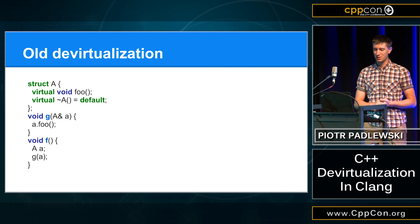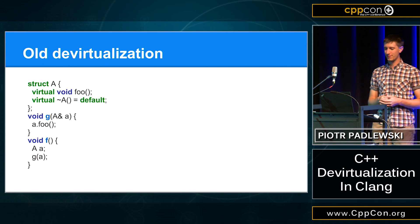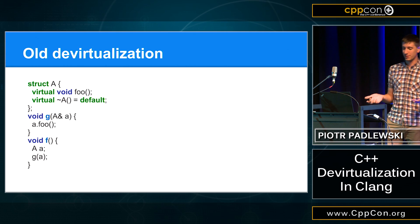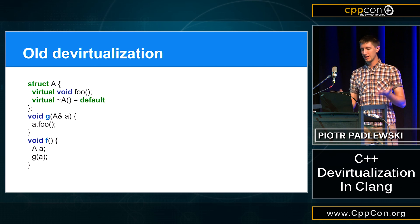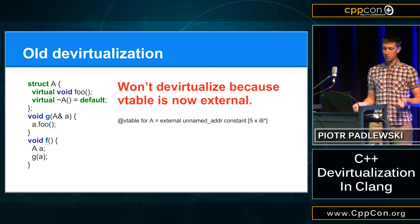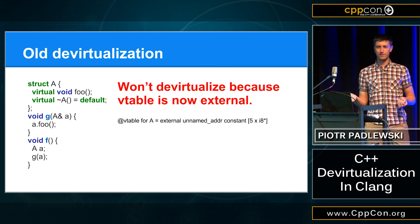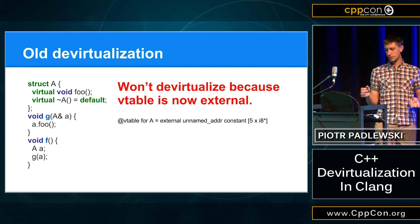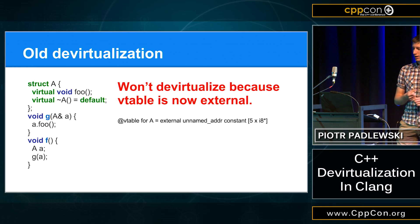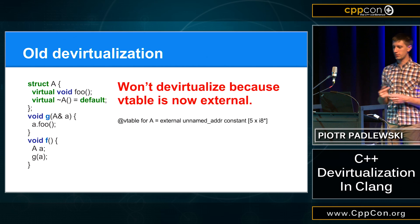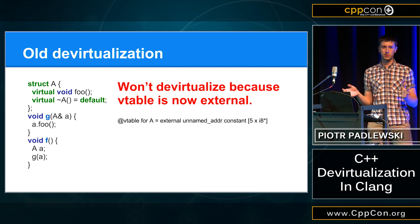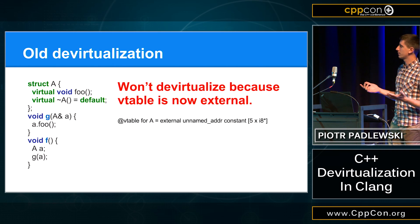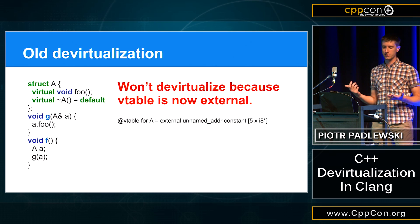Another example: if we have a virtual destructor that is default, then because this is an inline virtual function, the VTable will be external. This is because in Clang and GCC there is something called the key function optimization. What it tries to do is put the definition of the VTable only in one place so that binaries are smaller. And because of it, it's much harder to devirtualize.